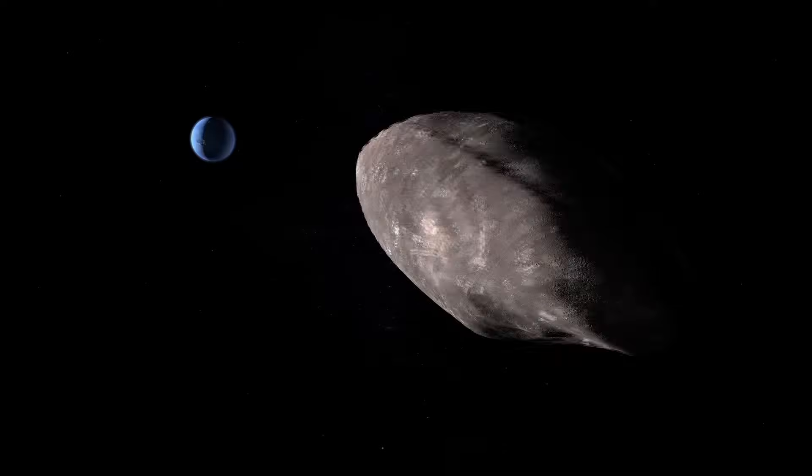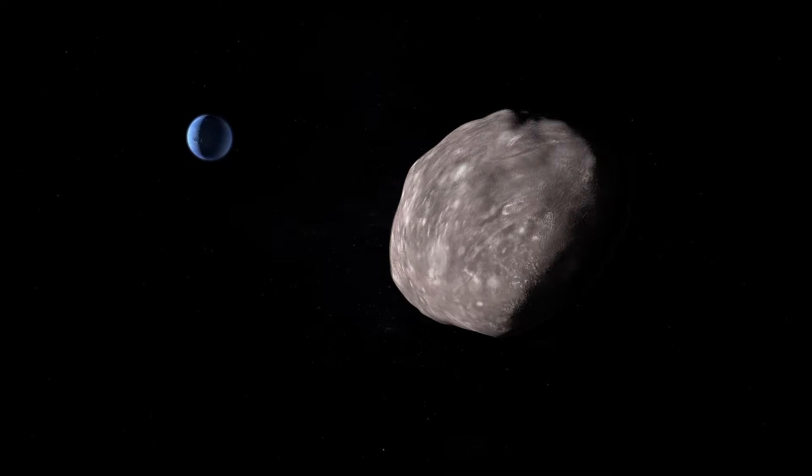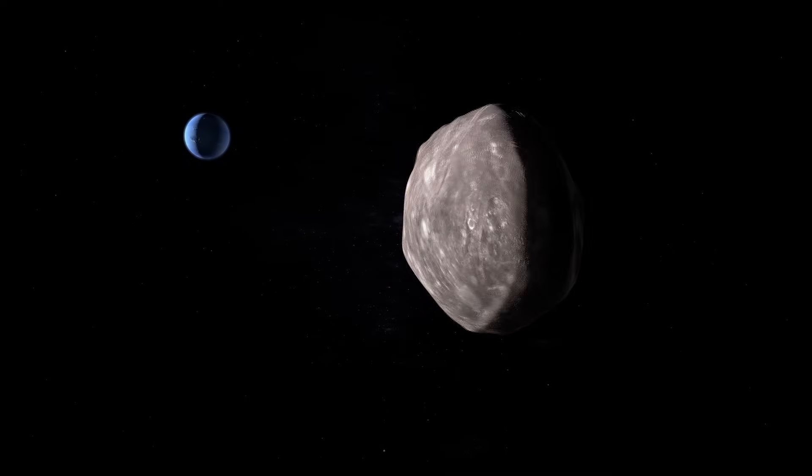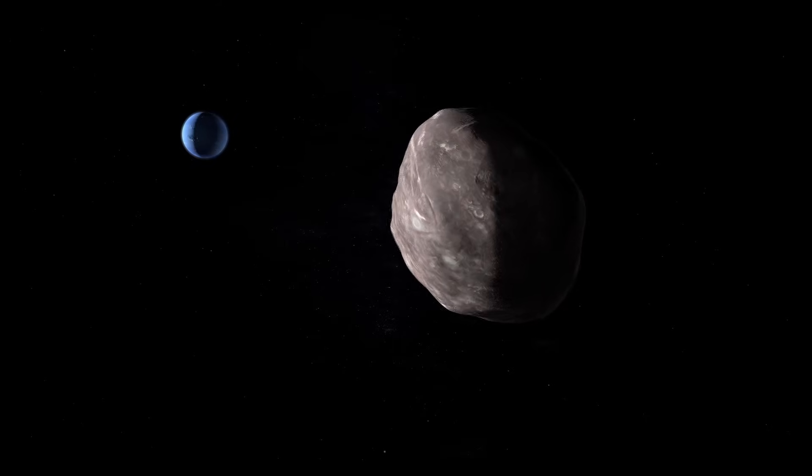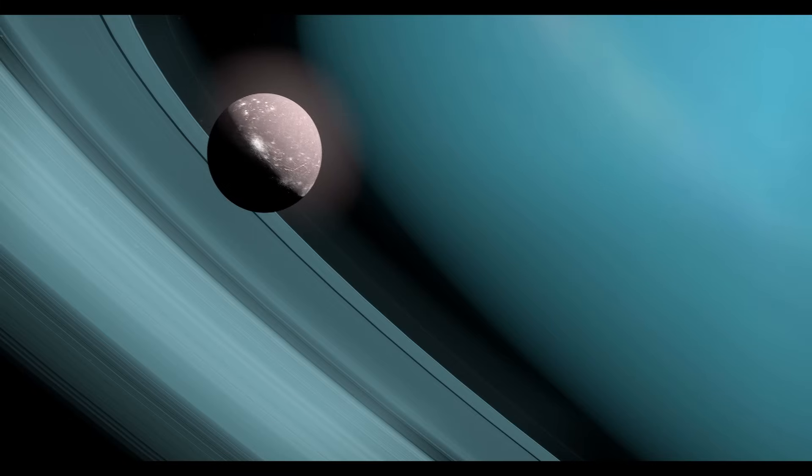The old lines between planet, moon, and asteroid are blurring as we find planetary processes, oceans, volcanoes, and complex chemistry in the most unexpected of places.